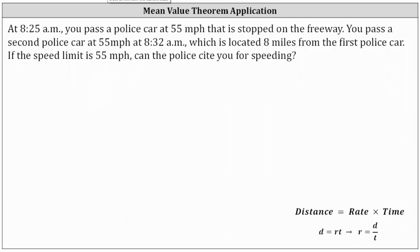At 8:25 a.m., you pass a police car at 55 miles per hour that is stopped on the freeway. You pass a second police car at 55 miles per hour at 8:32 a.m., which is located eight miles from the first police car. If the speed limit is 55 miles per hour, can the police cite you for speeding?